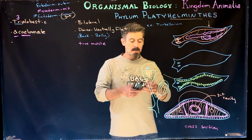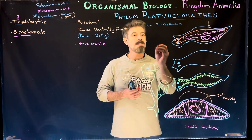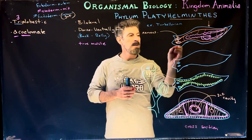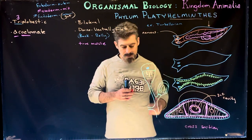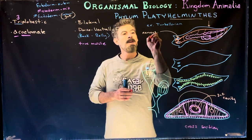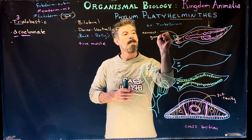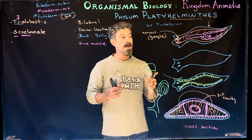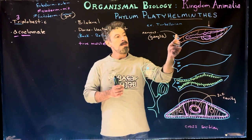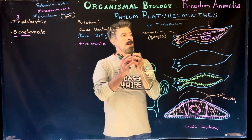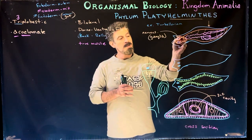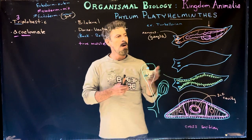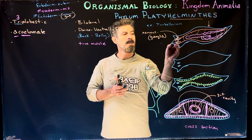In this particular drawing, a couple of things to highlight. First, the nervous system. They're going to have two areas of dense nerve tissue referred to as ganglia. Ganglia in these groups is kind of like our equivalent of a brain. They don't have a true brain, but they have two separate concentrations of nervous tissue and nerve cells right around the eye spots.